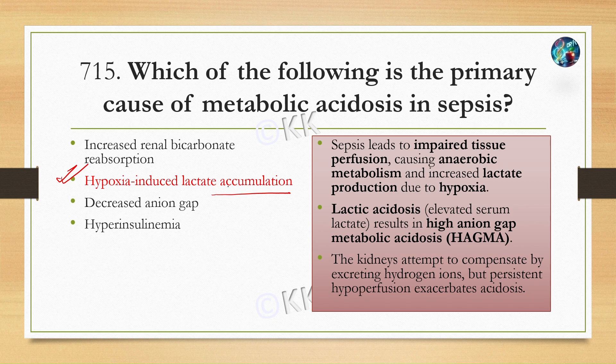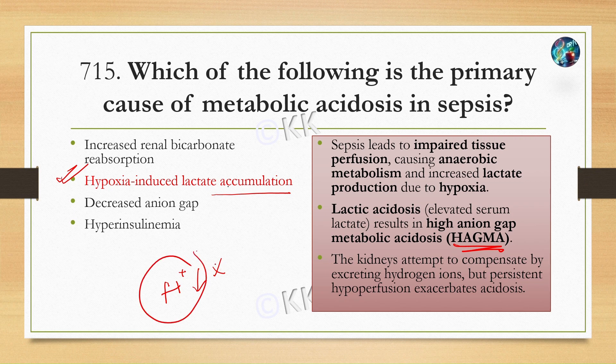Sepsis leads to impaired tissue perfusion, causing anaerobic metabolism and increased lactate production due to hypoxia. Lactic acid — familiar from class 10-12 biology — results in high anion gap metabolic acidosis, also called HAGMA. Despite the body's compensatory attempts, persistent hypoperfusion sustains this condition.